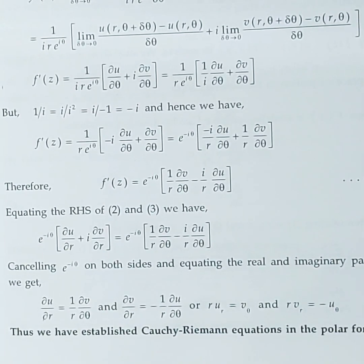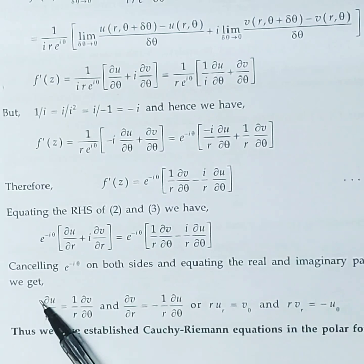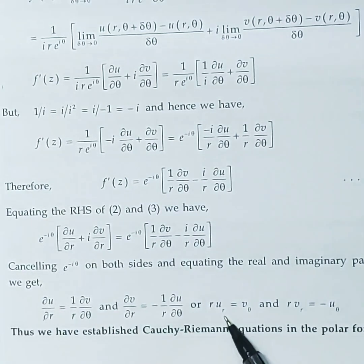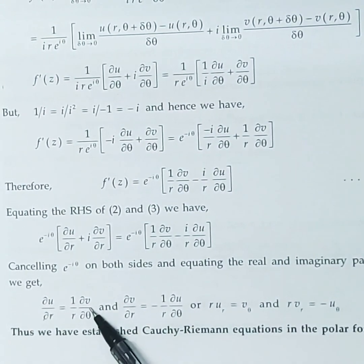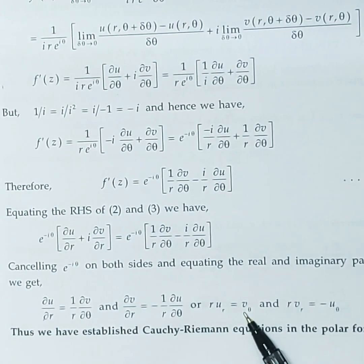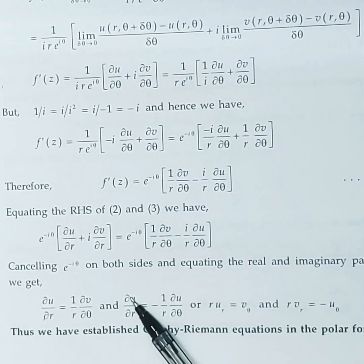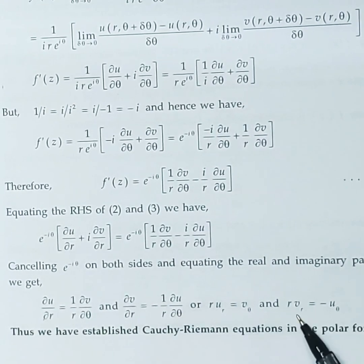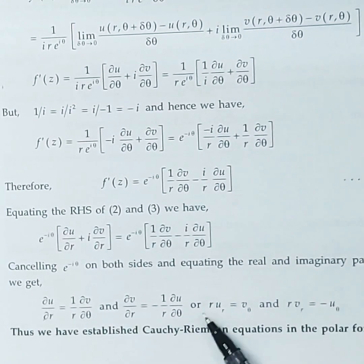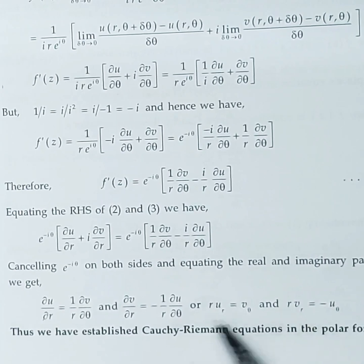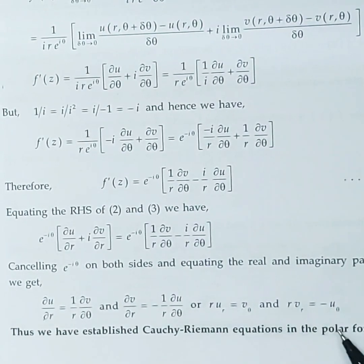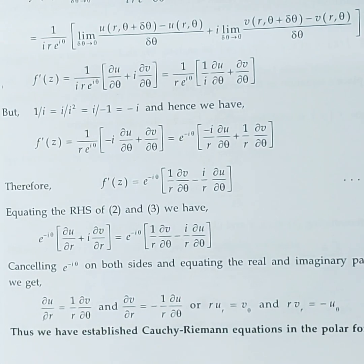In compact notation: r·u_r = v_θ (taking r to the other side) and r·v_r = −u_θ. Thus we have proved the Cauchy-Riemann equations in polar form, which are analogous to the CR equations in Cartesian form.